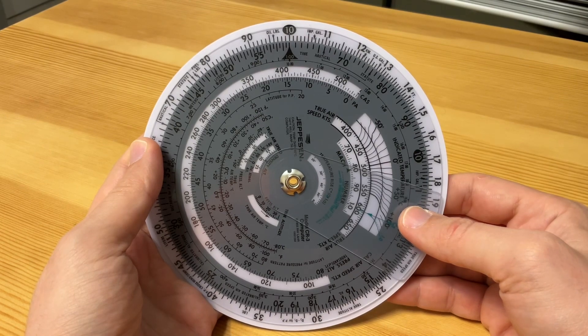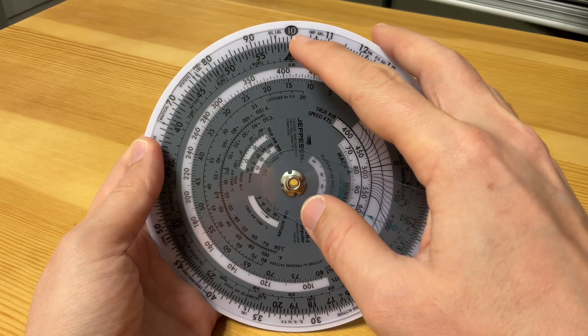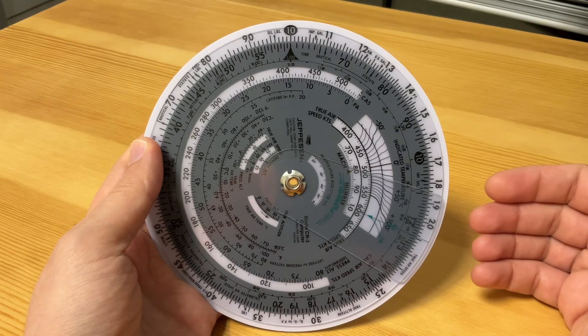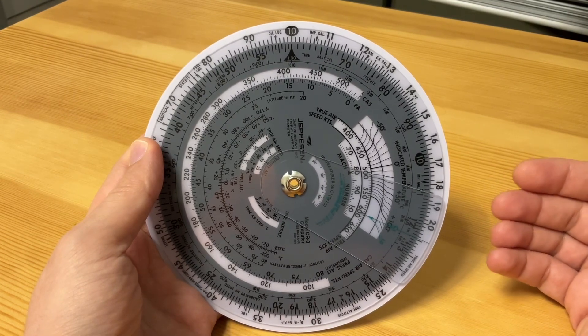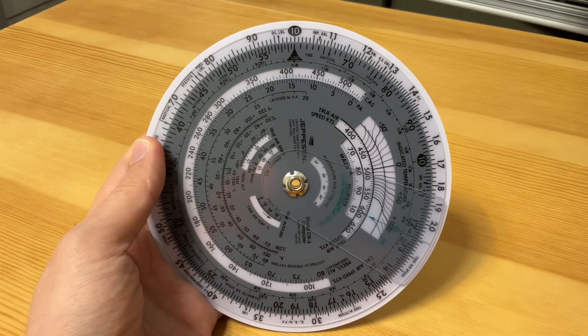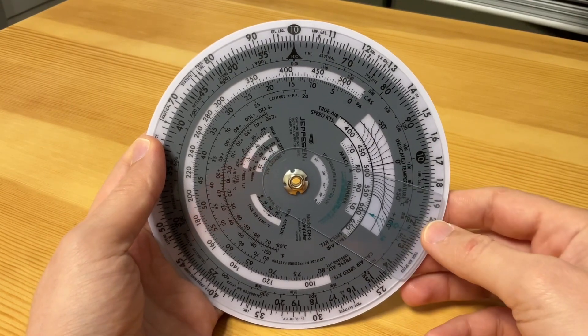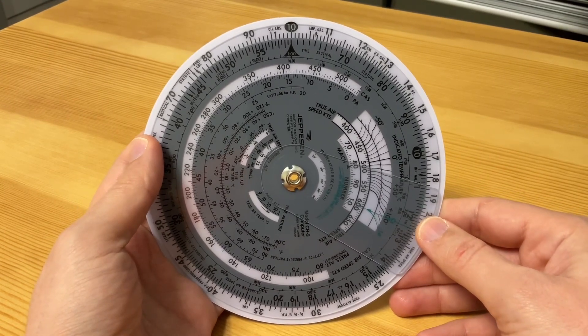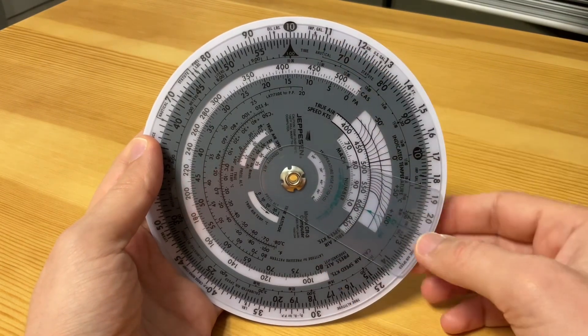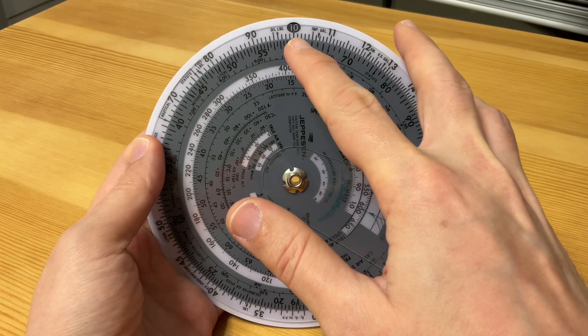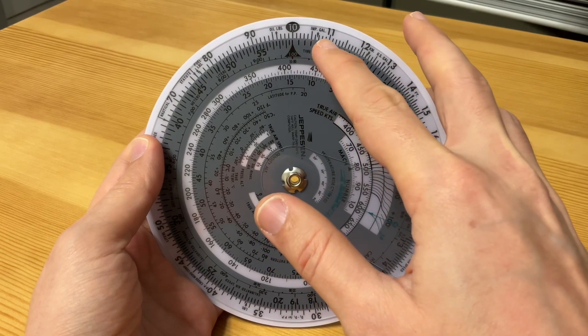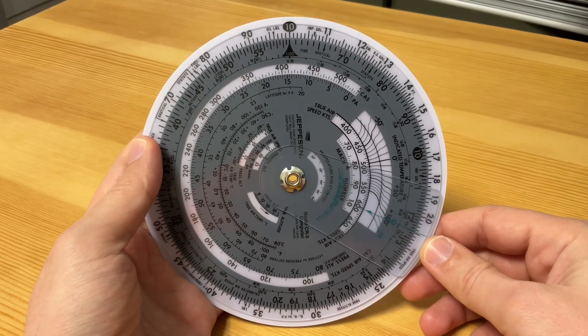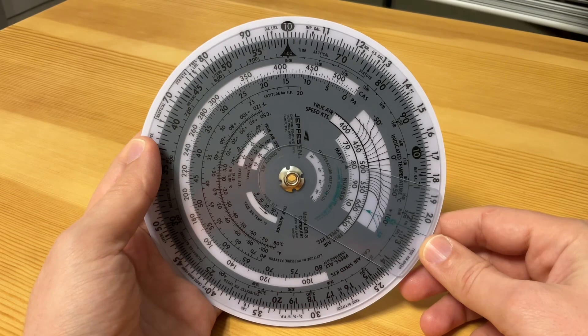Right now, this 10 could be read as 0.1 or 1 or 10 or 100 or 1000—it depends on the context of the problem. For now, we're reading it as 10. The next number to the right is 11, and each tick mark here is a 0.1 increase: 10.1, 10.2, 10.3.